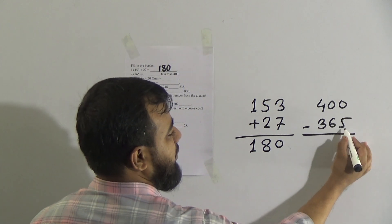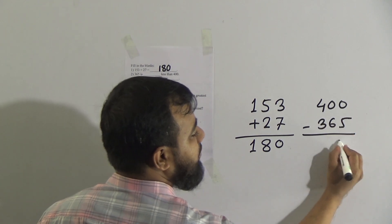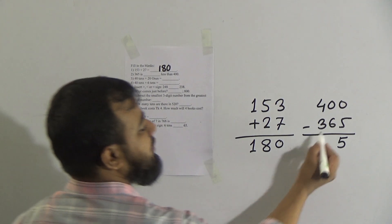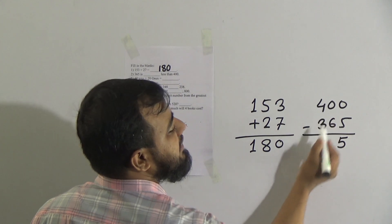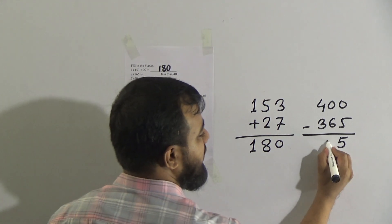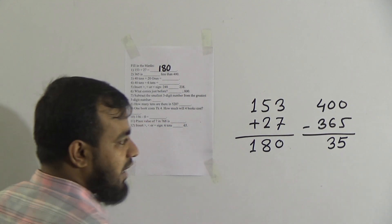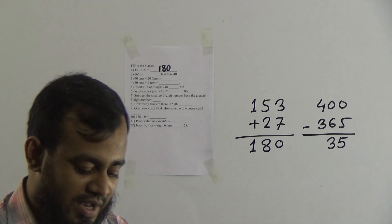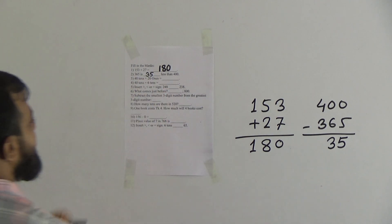From 0 we need to subtract 5 — not possible, so borrow 1. It becomes 10; subtract 5 from 10 gives 5. The borrowed 1 adds to 6, making 7. Subtract 7 from 0 — not possible again, so borrow 1 from the left; it becomes 10, subtract 7 gives 3. The remaining 1 comes with 3, making 4; subtract 4 from 4 gives 0. So 35 is our answer for question number 2. 365 is 35 less than 400.